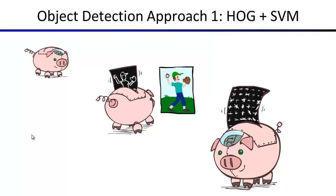What does HOG do? You take an image and first convert it to grayscale, because usually the color doesn't affect whether you want to detect something or not. Once converted to grayscale, you run an edge detector — a filter that finds the high frequencies where the image is rapidly changing pixel values. You can see the result on this slide: the edges are highlighted.